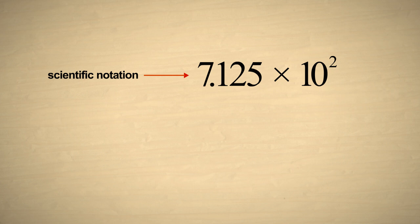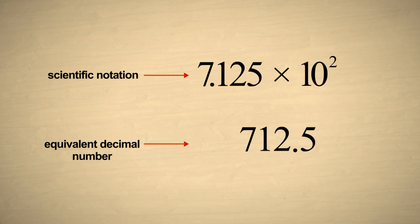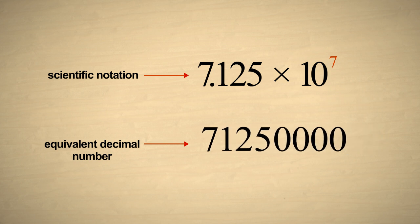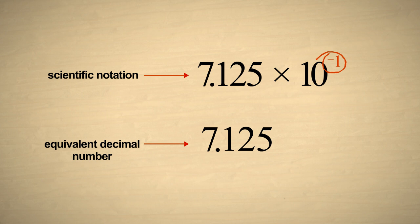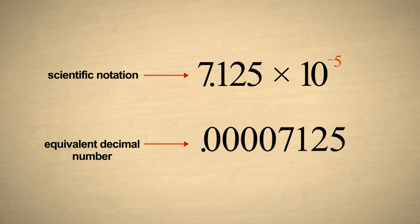To convert a number written in scientific notation to a standard decimal number, we simply multiply the first part times the second part. This moves the decimal point to the proper position in the number. If the exponent of the multiplier is zero, the decimal point does not move, since multiplying by ten to the zero power is the same as multiplying by one. If the exponent of the multiplier is positive, the decimal point is moved that many columns to the right. If the decimal point must move beyond the last digit, zeros are added to the end of the number to accommodate its new position. If the exponent is negative, the decimal point is moved that many columns to the left. If the decimal point must move beyond the first digit, zeros are added to the beginning of the number to accommodate its new position.